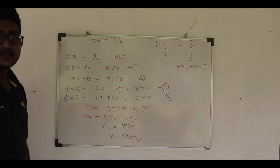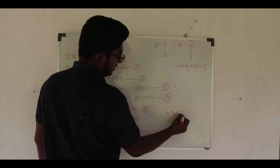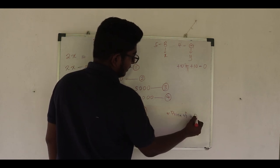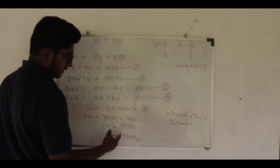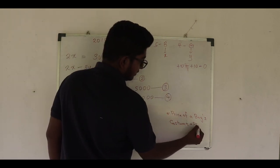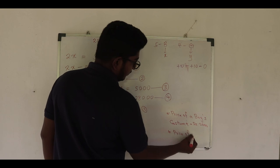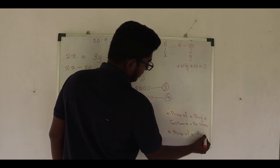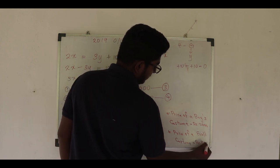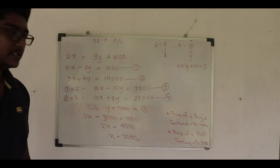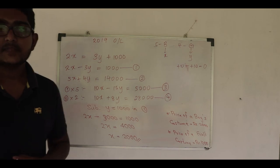After obtaining x and y by simplification, we write: the price of a boy's costume, which is x, is rupees 2,000, and the price of a girl's costume, which is y, is rupees 1,000. This is the answer for the first part of the equation problem. Thank you.